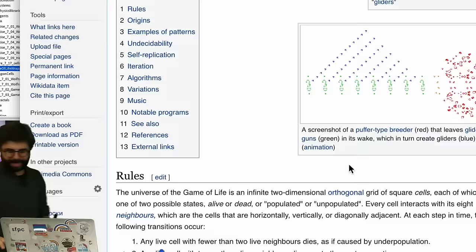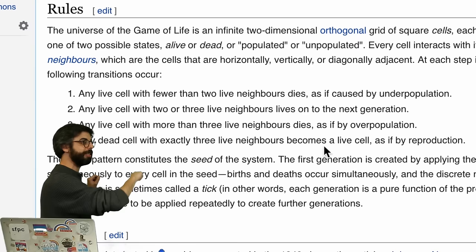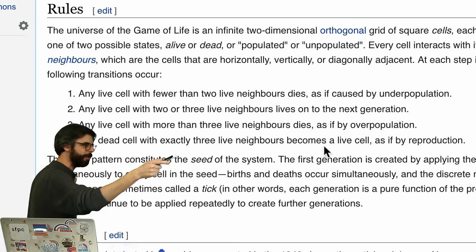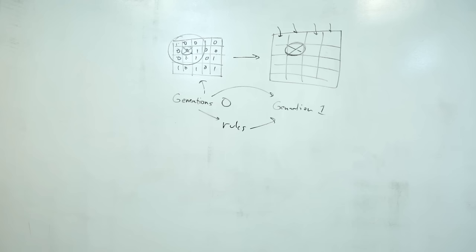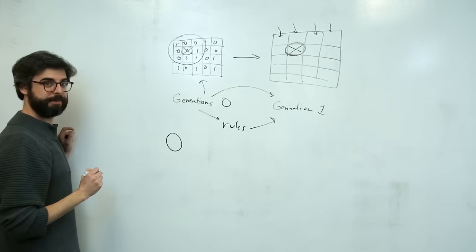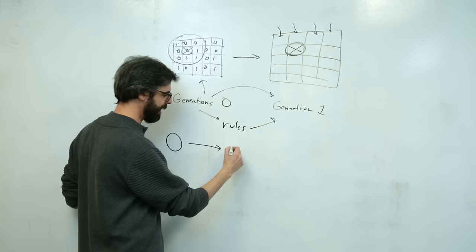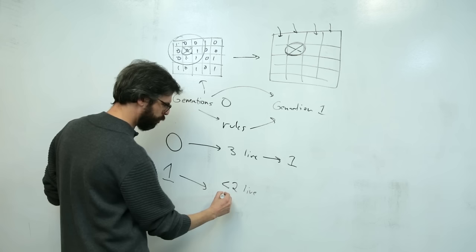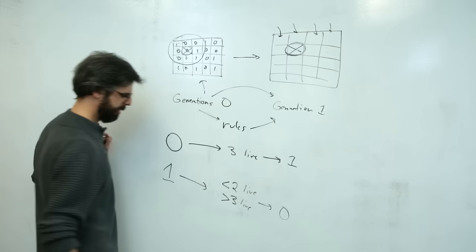We can go back to the Wikipedia page and read the rules precisely. Any live cell with fewer than two neighbors dies, as if caused by underpopulation. Any live cell with two or three neighbors lives on to the next generation. Any cell with more than three neighbors dies by overpopulation. Any dead cell with exactly three live neighbors becomes a live cell, as if by reproduction. I think I can simplify this: if the cell is dead — it's a zero — it's only going to change to a one if it has exactly three live neighbors; otherwise it stays zero. A one is going to stay a one unless it has fewer than two or greater than three live neighbors, then it dies. So birth happens with exactly three neighbors; death happens with fewer than two or greater than three.